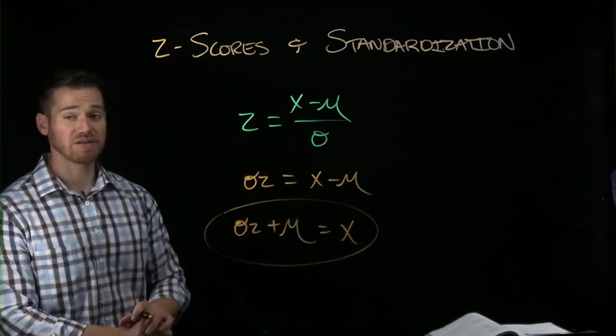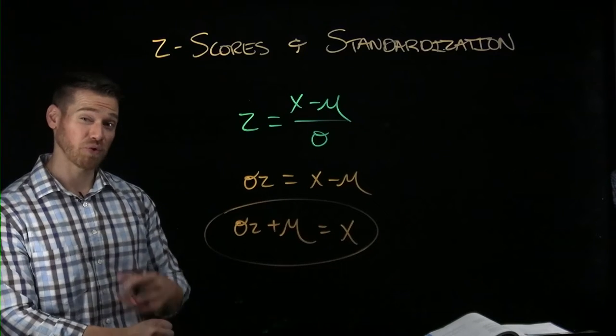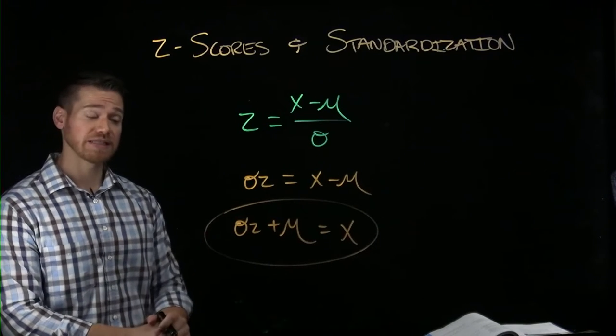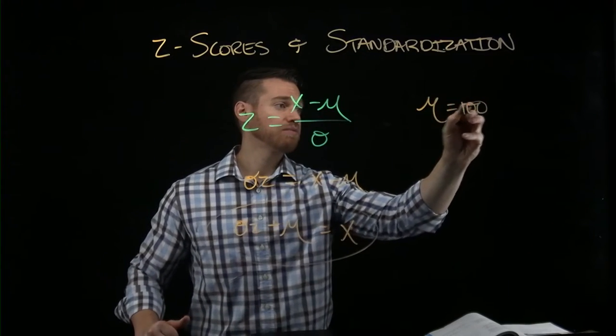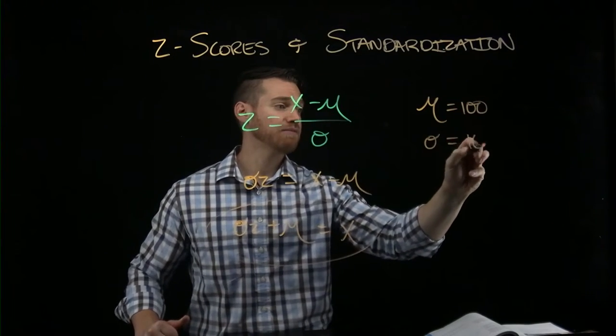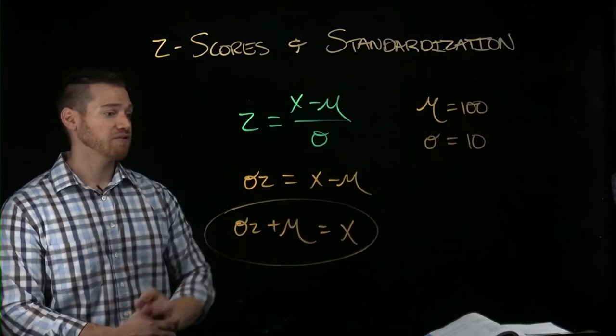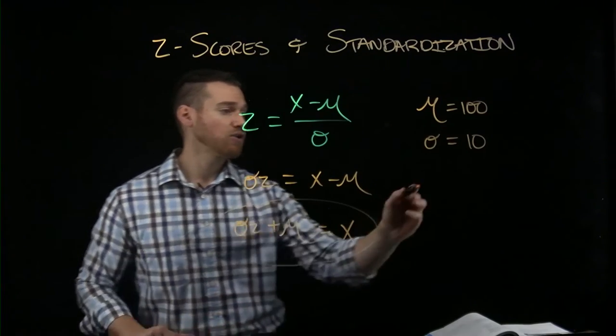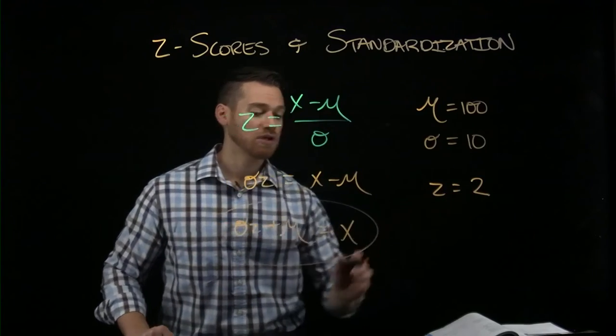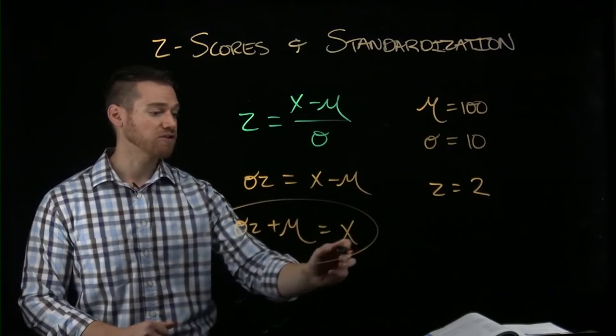So here we can quickly have an equation that allows us to solve for an original x score from a standardized distribution. If we have a distribution here with a mean of 100 and a standard deviation of 10, we can input this information knowing the z-score to quickly find x. So if z here equals 2, we can input this and solve for x.